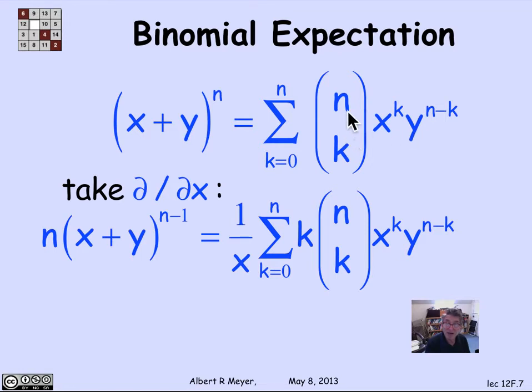But I'd like to keep the n and the k here and the k there matching. So after differentiating that becomes an x^(k-1), let's multiply it by x to make it x^k. And of course, I have to undo that multiplication by dividing the whole thing by 1 over x. So by differentiating the binomial formula,